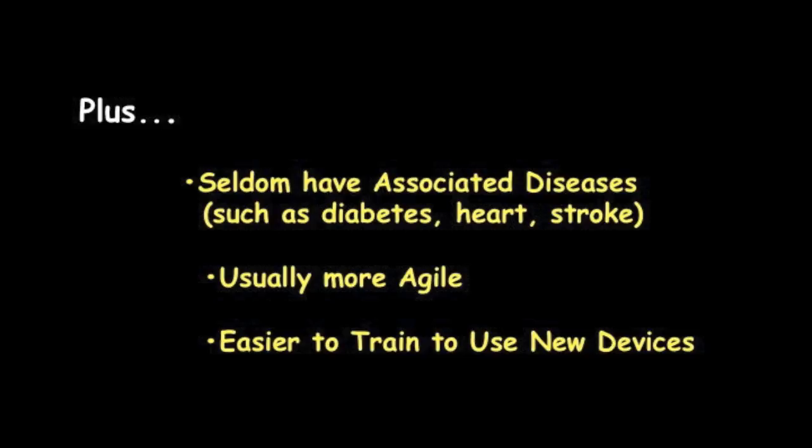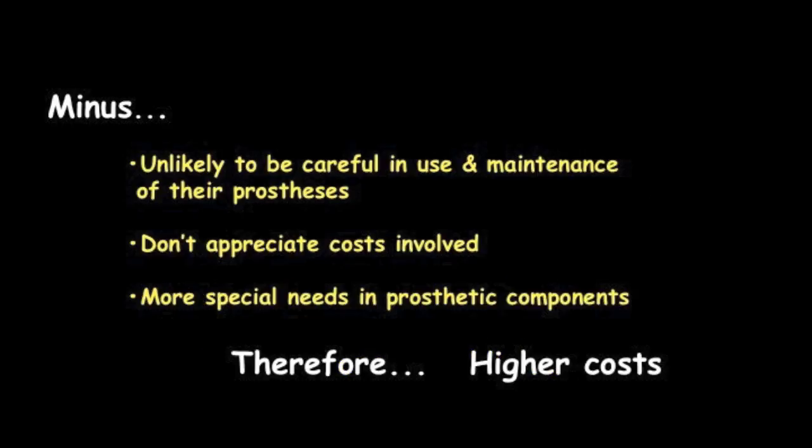Children seldom have associated diseases such as diabetes, heart disease, and stroke, which are diseases that truly complicate managing adults with limb deficiencies. On the positive side, the child is more likely to be agile and easier to train to use new devices. On the other hand, they're unlikely to be careful in their use and maintenance of their prostheses, and they surely don't appreciate the tremendous costs involved. There are more special needs in prosthetic components, and therefore the costs are higher.